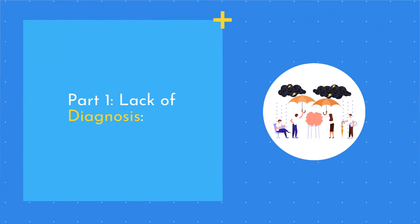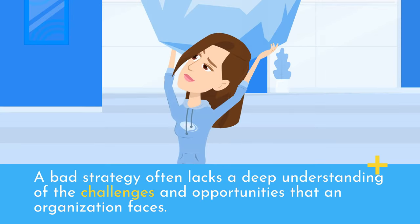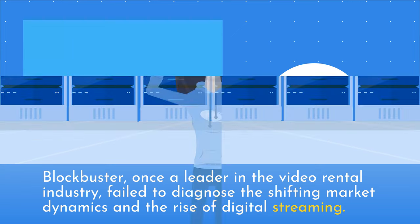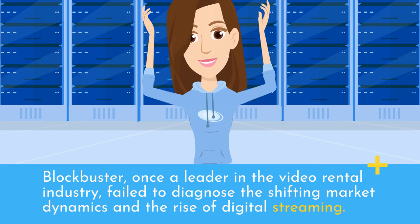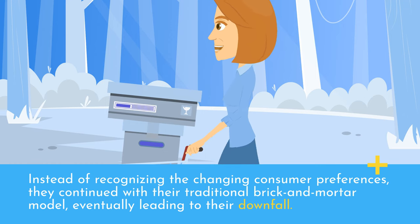Part 1: Lack of Diagnosis. The first pillar of a good strategy is a clear and insightful diagnosis of the current situation. A bad strategy often lacks a deep understanding of the challenges and opportunities that an organization faces. Example 1 — Blockbuster. Blockbuster, once a leader in the video rental industry, failed to diagnose the shifting market dynamics and the rise of digital streaming. Instead of recognizing the changing consumer preferences, they continued with their traditional brick-and-mortar model, eventually leading to their downfall.